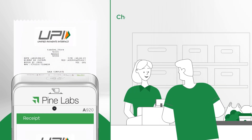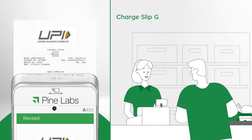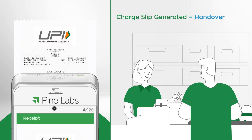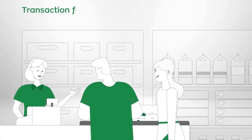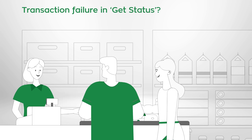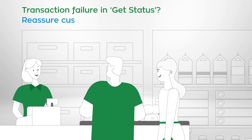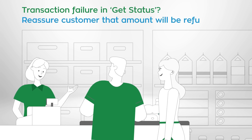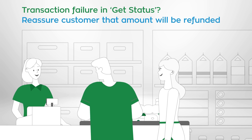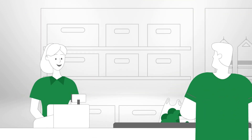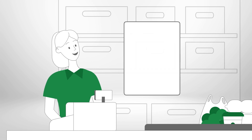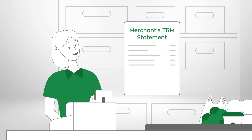Once the charge slip is generated for a successful transaction, you can hand over goods to your customer. If the transaction does not reflect during Get Status, reassure your customer that the amount will be refunded. Now you can re-initiate the UPI transaction. You can also check the transaction status in real time in TRM.